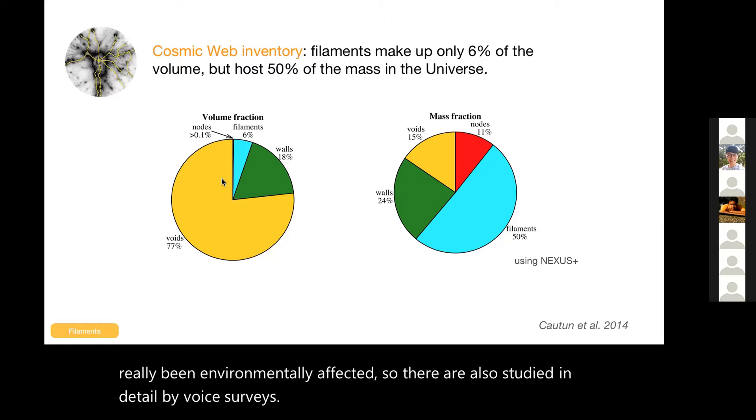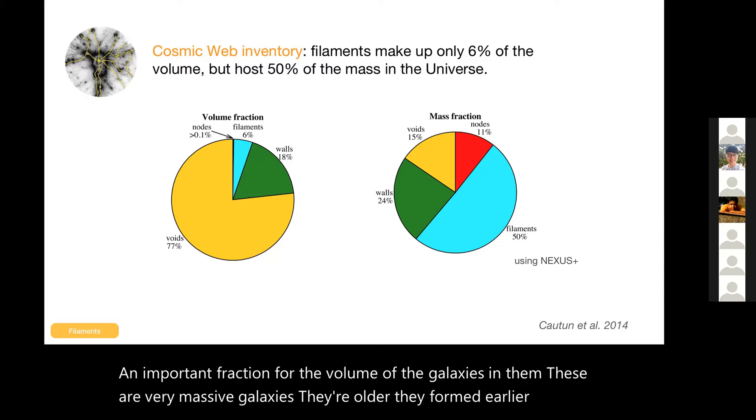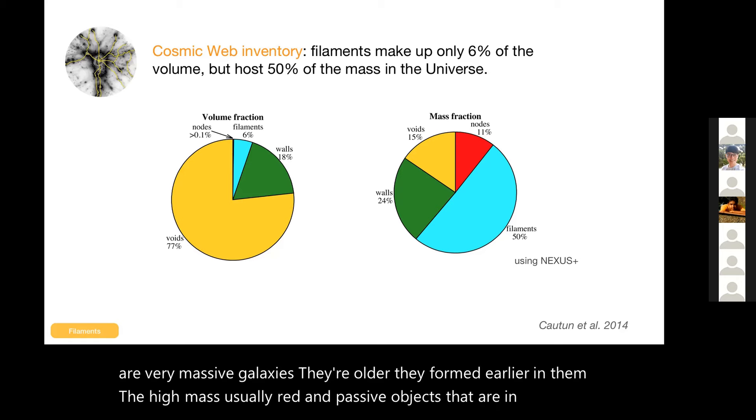Looking at surveys, why do we so rarely see walls? That's the green part. It's not that they're not interesting, but they have a lower surface density than average and the galaxies that lie in them are also lower mass, so they just drop out. It's harder to see them. So I'm not saying much about walls. Knots - that's the galaxy clusters, that's this tiny chunk here. Obviously they host an important fraction of the volume of the galaxies in them. These are very massive galaxies, they're older, they formed earlier. The high mass, usually red and passive objects are in the center of the clusters.